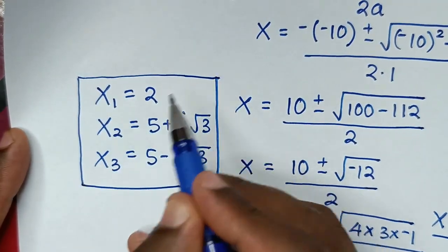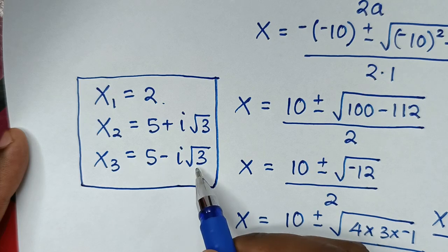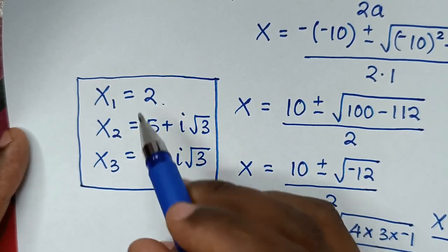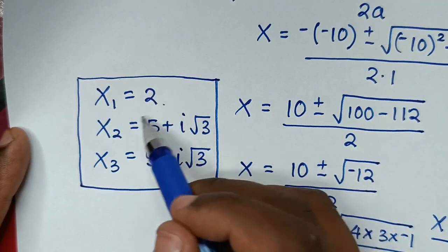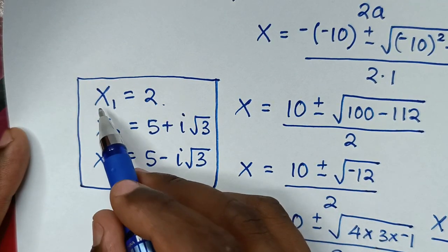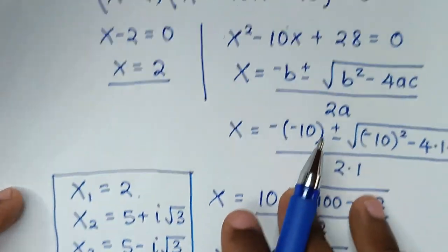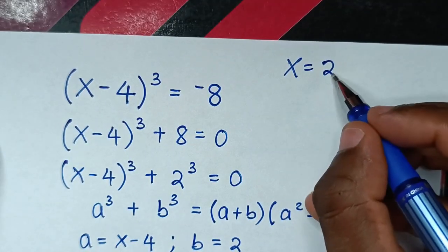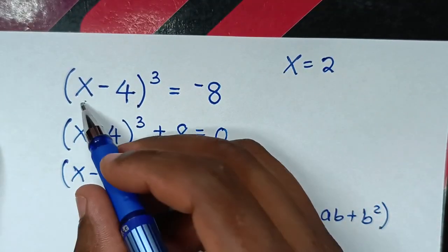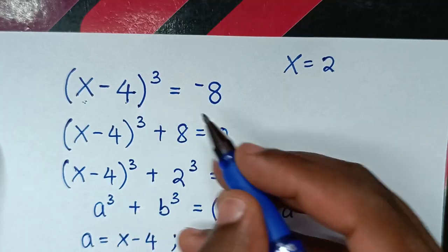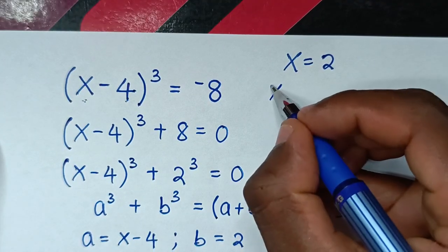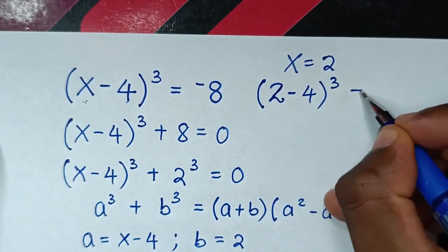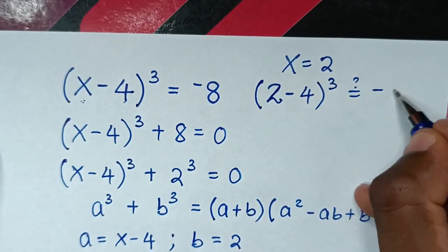To verify, we check the real solution x = 2 in the original equation. Substituting x = 2: (2 - 4)³ should equal -8.